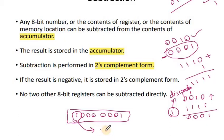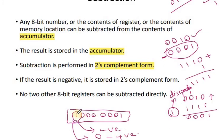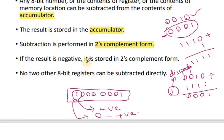If the most significant bit is 1, the number is negative. If it is 0, the number is positive. So in a register, we can determine the sign from the last (most significant) bit. If the result is negative, it is stored in 2's complement form. Also, no two 8-bit registers can be subtracted directly.